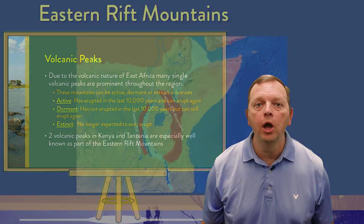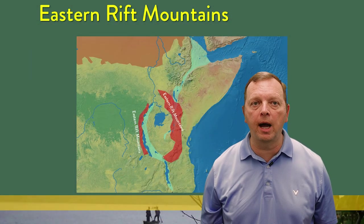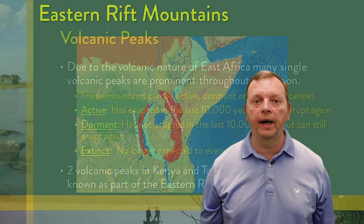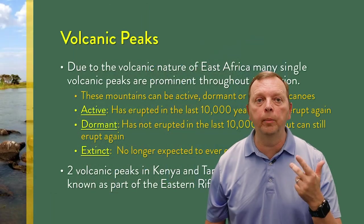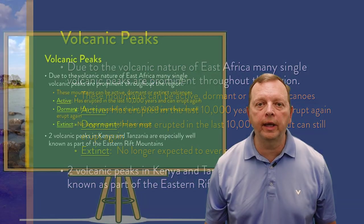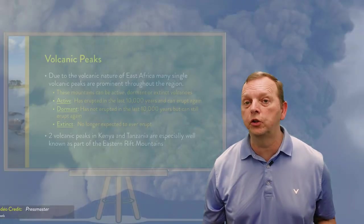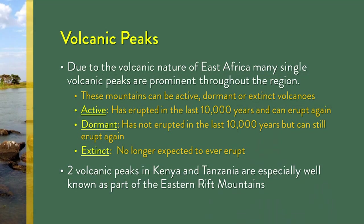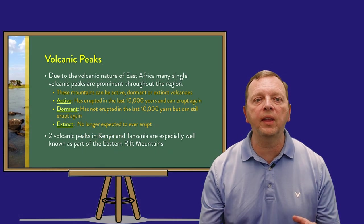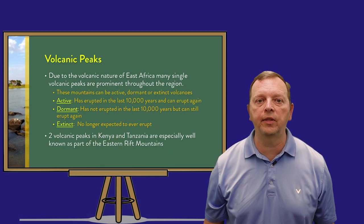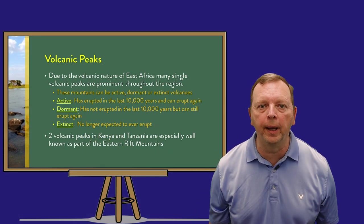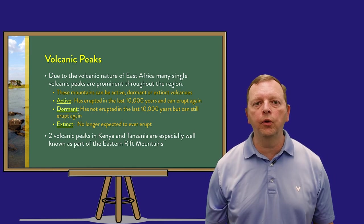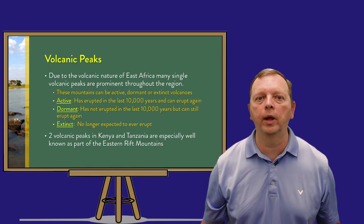The group of volcanoes created by the Rift Valley are known as the Eastern Rift Mountains. All volcanoes are divided into three groups: active, dormant, and extinct. An active volcano means there has been an eruption in the last 10,000 years, and geologists pretty much know it will erupt sometime in the future. Geologists also believe that dormant volcanoes will erupt in the future, but they haven't done so in the last 10,000 years — they're just sleeping. Extinct volcanoes are those that geologists believe will never erupt again.